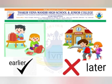Tick the action that is done earlier and cross the action that is done later. We pack our bag earlier. Later, we go to school. Here students, we will put a tick mark on 'We pack our bag earlier', and a cross mark on 'We go to school later'.